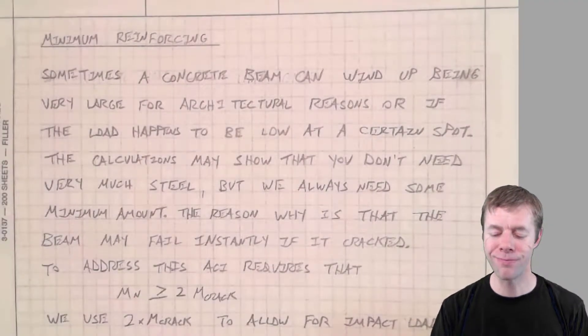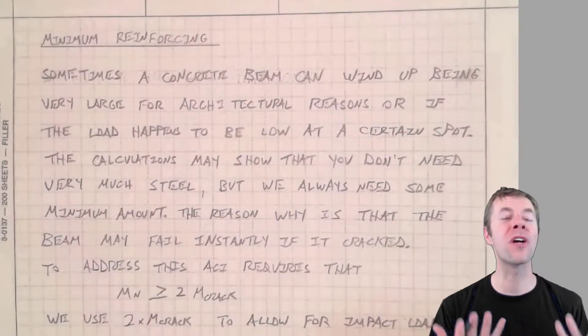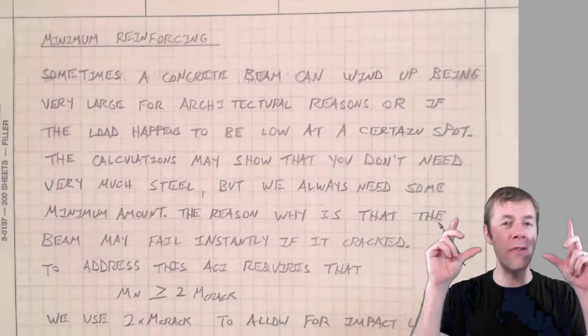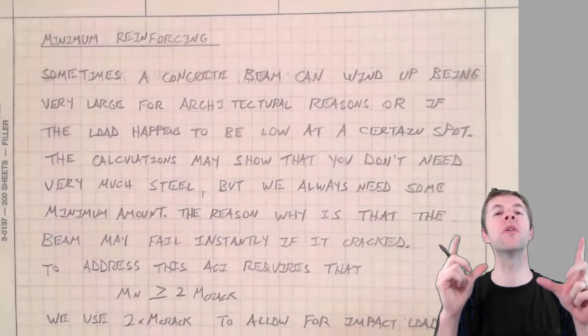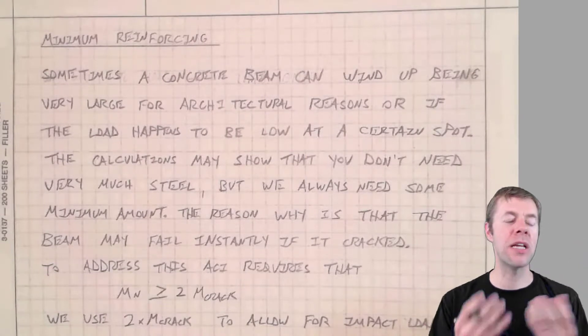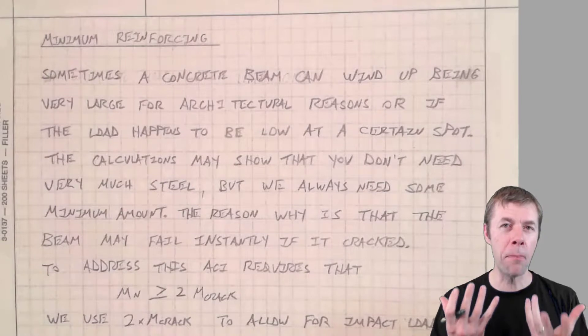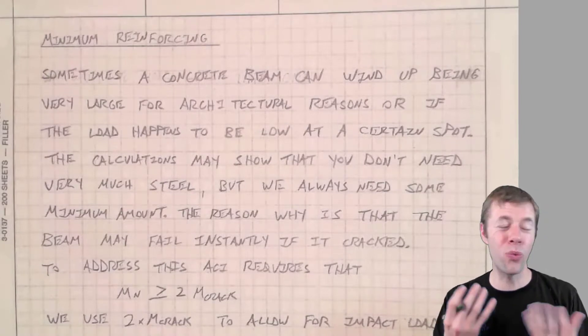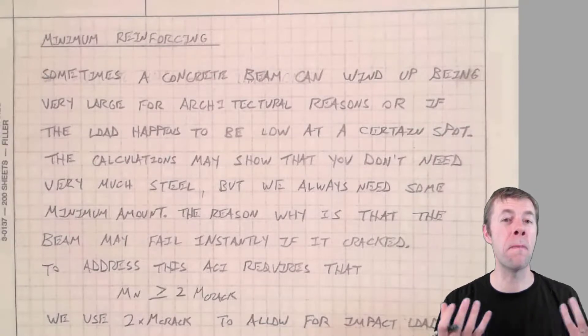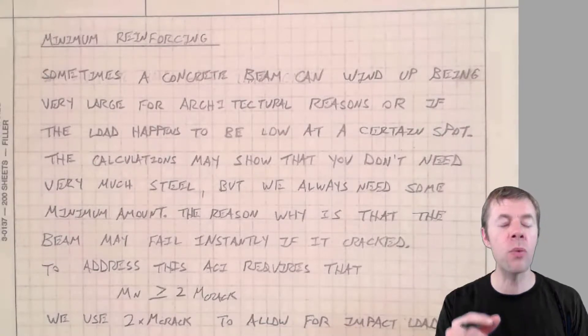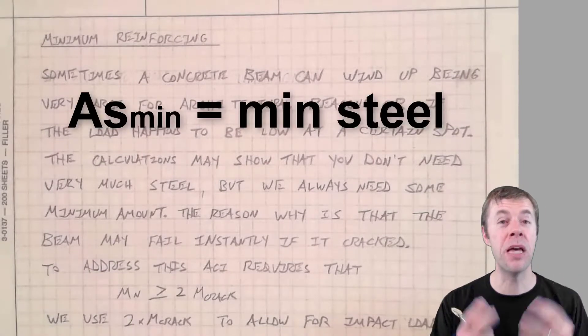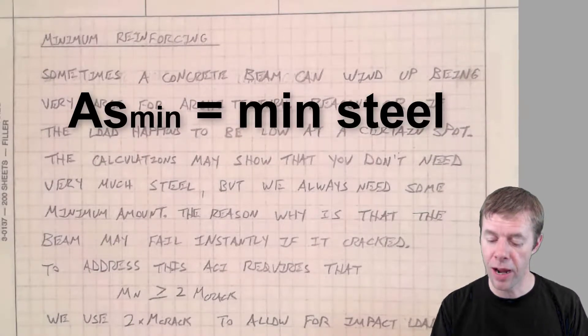Sometimes when we design beams, they can be very large for all kinds of different reasons. Sometimes they're architectural reasons. Sometimes in that region, we just don't have a lot of moment, and so we want to reduce the amount of steel to some minimum value. But there's some minimum value that we just don't want to go below. And that's called AS min. And we're going to talk about that today and actually derive it.